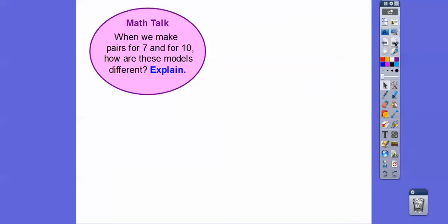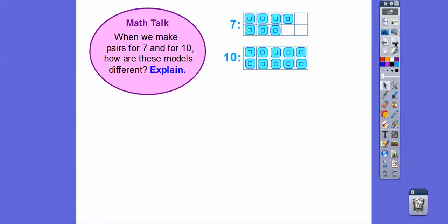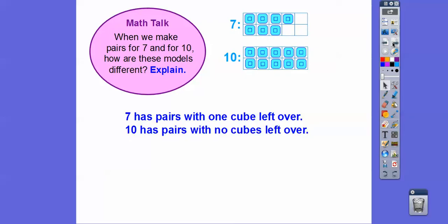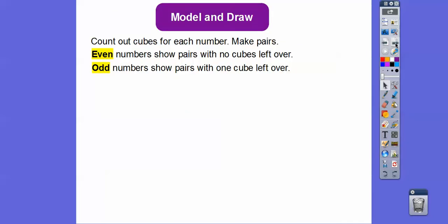When we make pairs for 7 and for 10, how are these models different? Here's 7: 1, 2, 3, 4, 5, 6, 7. And here's 10 right there. The difference is 7 has pairs with 1 cube left over, and 10 has pairs where there's no cubes left over. So even numbers show pairs with no cubes left over, and odd numbers show pairs with cubes left over.